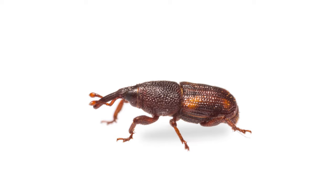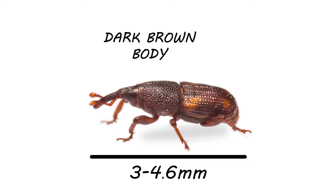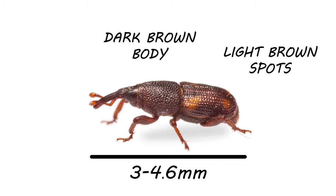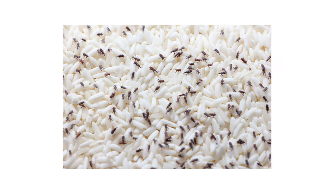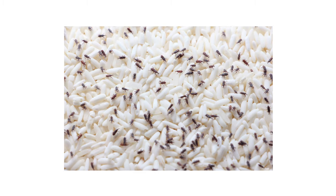Rice weevils are smaller than even grains of rice, growing only to be as large as 3 to 4.6 millimeters in length. They have dark brown bodies and you may even notice some lighter brown patches if you can see them close up enough. You can tell a weevil apart from other pests like grain beetles because you'll notice the weevil's long snout. It's hard to miss, even if they're that small. You'll most likely only spot adult rice weevils rather than any eggs, larvae, or pupae.